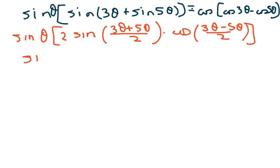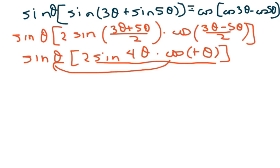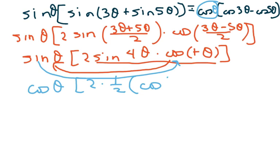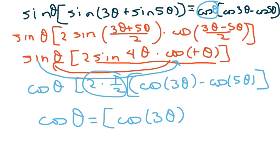Simplify and we get sine of theta times 2 sine of 4 theta times cosine of negative theta. Change that to positive — it's an even identity. Now write the inner part as a product to sum: move cosine of theta out and get 2 times one half of (cosine of 3 theta minus cosine of 5 theta). When this cancels out, you get cosine of theta times (cosine of 3 theta minus cosine of 5 theta).